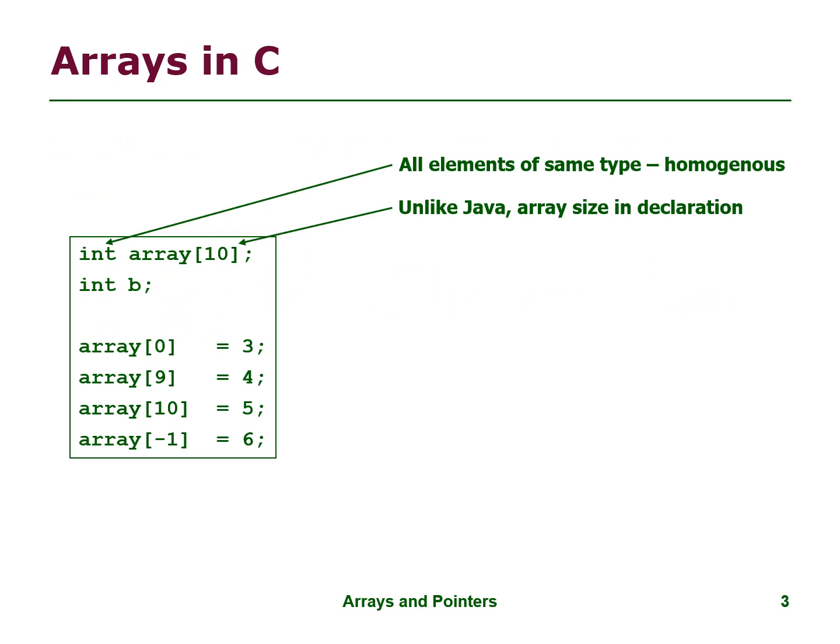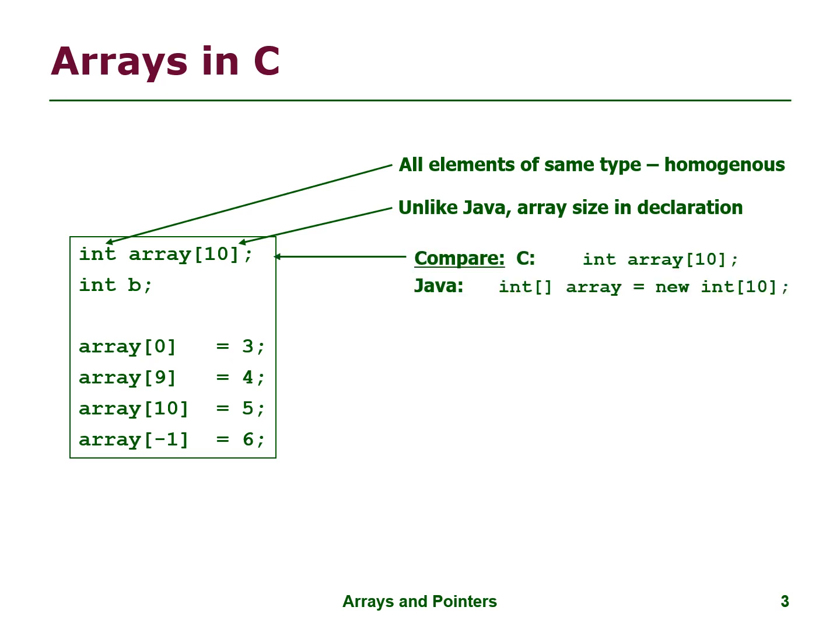Arrays in C are a kind of data structure that can store a fixed-size sequential collection of elements of the same type. Unlike Java, array size is specified in declaration. The first element has index zero and the last element has index size minus one.